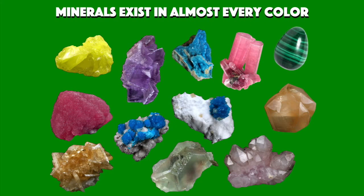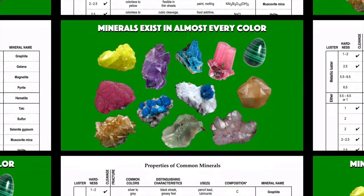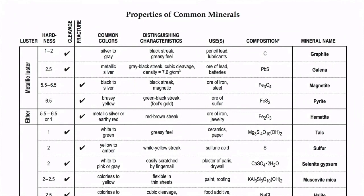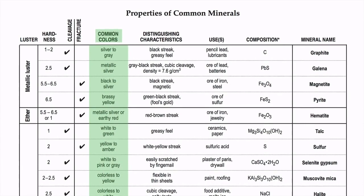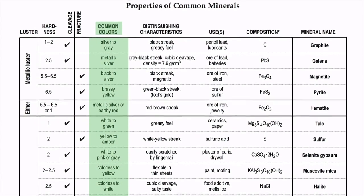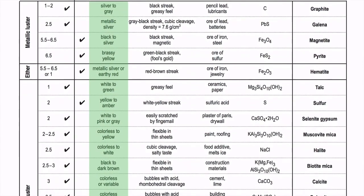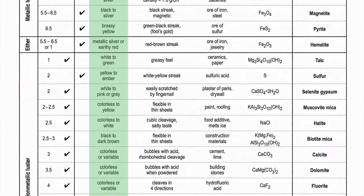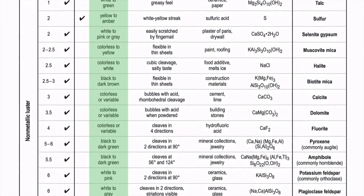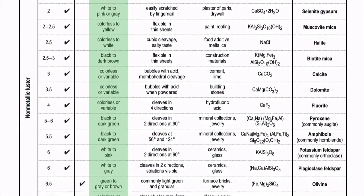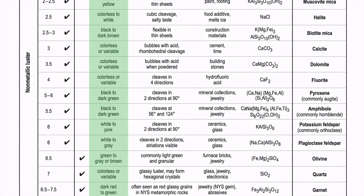All minerals can be identified based on their physical characteristics. We'll be looking at five general characteristics and how we can use them to observe and identify minerals. We'll also talk about some other tests that we can do that fall under the 'other' category — tests that not all minerals will have.